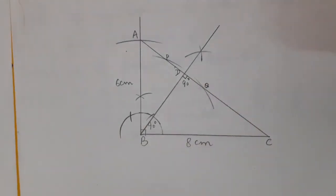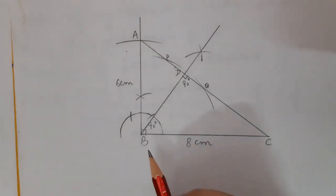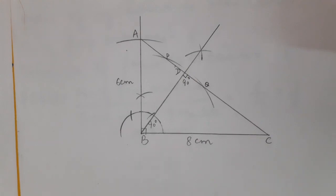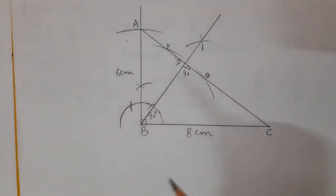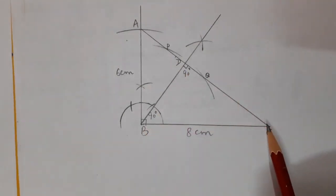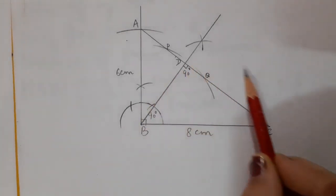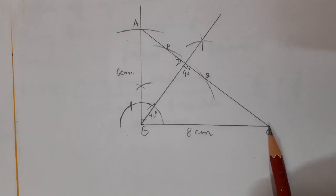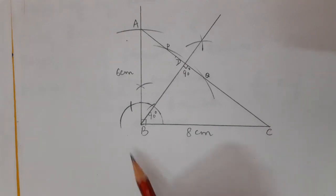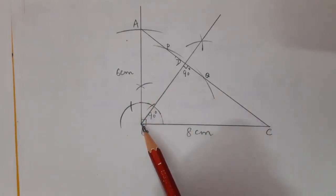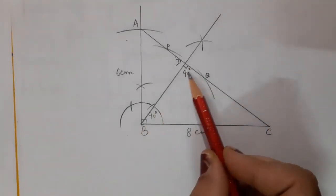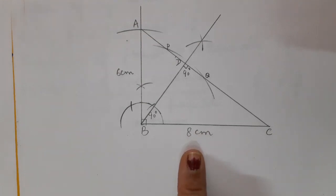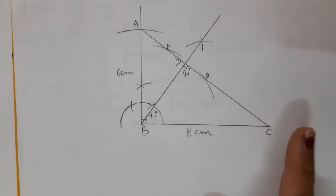Now BD is perpendicular from B to hypotenuse AC. To find point D: keep compass at B and draw two arcs of any suitable radius that cut the hypotenuse, getting points P and Q. Draw the perpendicular bisector of PQ — draw arcs from P and Q and join the intersections back to B. This gives point D on hypotenuse AC such that BD ⊥ AC, and angle BDC = 90°.